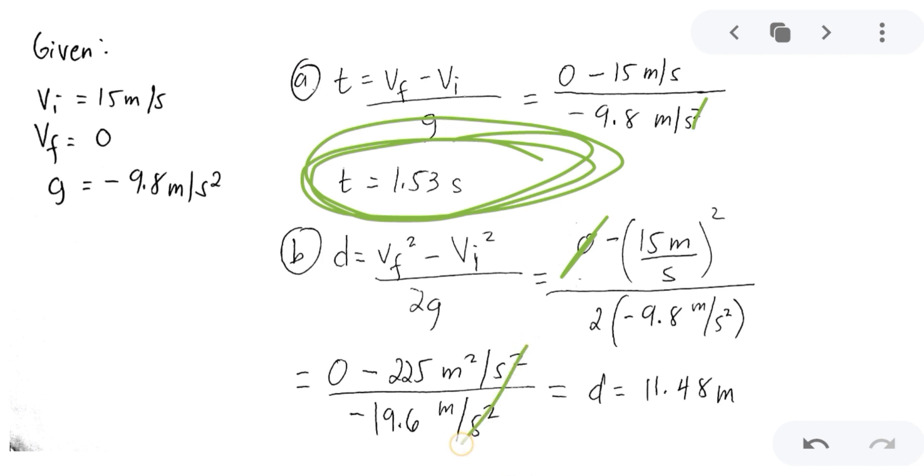Then cancel the second unit, you will have a meter unit left and then you will have to divide this one you will have 11.48 meters. This is the answer for the distance.